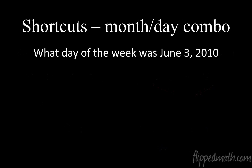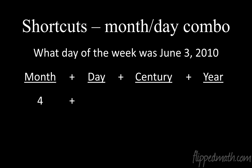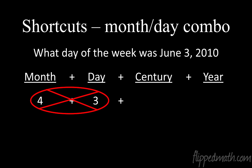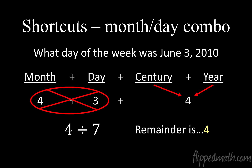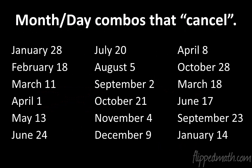The last shortcut: when a month-day combo can reduce together. June is 4, and if the day is 3, then 4 plus 3 is 7 — divisible by 7, so it just cancels out entirely. Then all you focus on is the century and year value: 4 divided by 7 has a remainder of 4, so that's a Thursday. Here are all the month-day combos that totally cancel out — for example, January 28th gives 0 plus 28 equals 28, which is divisible by 7. March 18th: 3 plus 18 equals 21, which cancels out. These tricks can really speed up the calculation.